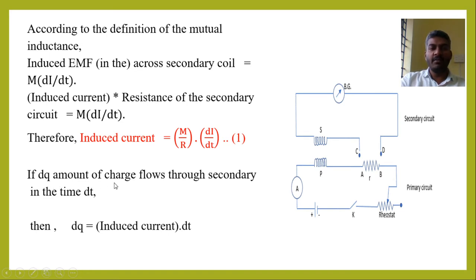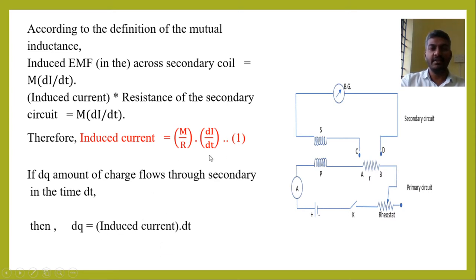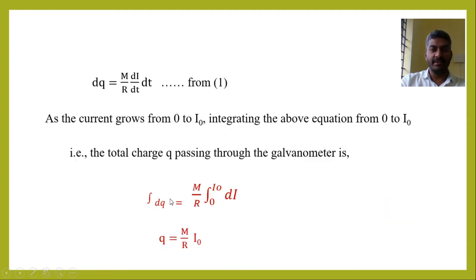Now, if dQ is the amount of charge that flows through the secondary in the time interval dt, then dQ equals the induced current multiplied by dt. The induced current is (M/R) × dI/dt. Substituting, we get dQ = (M/R) × (dI/dt) × dt, and the dt terms cancel.